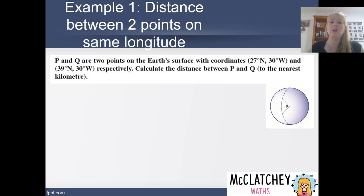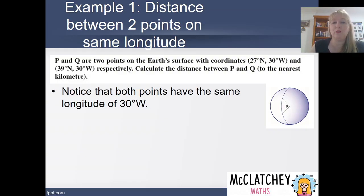So let's look at an example here. P and Q are two points on the earth's surface with coordinates given respectively. Let's calculate the distance between P and Q to the nearest kilometer.